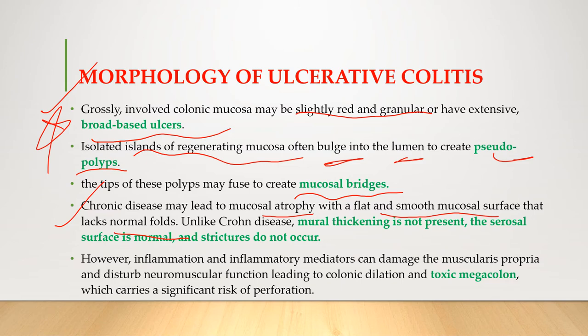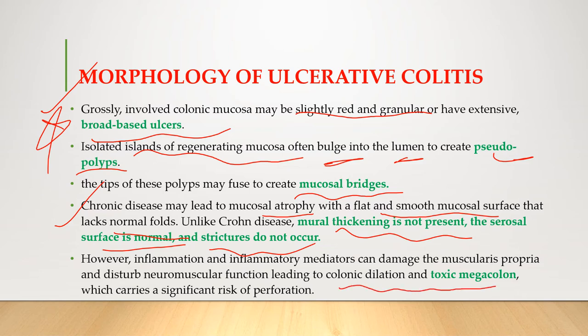Chronic disease may lead to mucosal atrophy with a flat and smooth mucosal surface lacking normal folds, causing loss of haustra. In barium contrast enema, ulcerative colitis appears as lead pipe rigidity due to this mucosal atrophy. Unlike Crohn's disease, mural thickening is not present, the serosal surface is normal, and strictures do not occur. However, inflammation can damage the muscularis propria, leading to colonic dilation and toxic megacolon with significant risk for perforation.